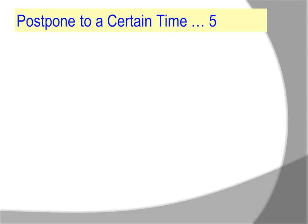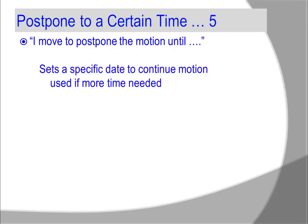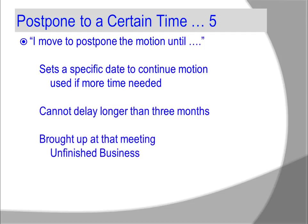What is postpone to a certain time? 'I move to postpone the motion until...' This sets a specific date to continue the motion. It is used if more time is needed. It cannot delay longer than three months. It is brought up at that meeting under unfinished business.